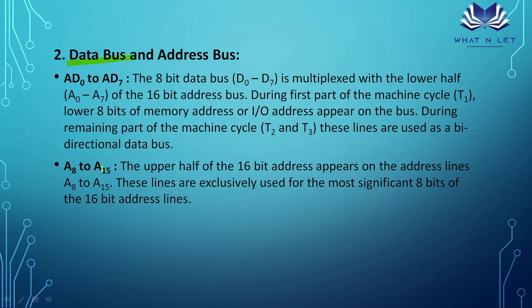The address bus is 16 bits and unidirectional. AD0–AD7 is the low-order time-multiplexed address-data bus, while A8–A15 is the high-order address bus — unidirectional lines that carry the upper half of the 16-bit address. AD0–AD7 carries the lower 8 bits of the 16-bit address when functioning as address bus, and data when functioning as data bus.